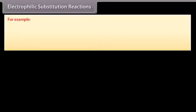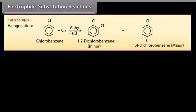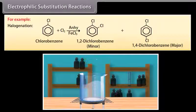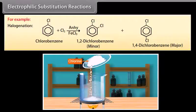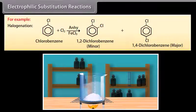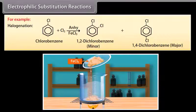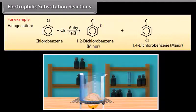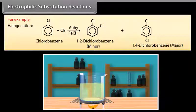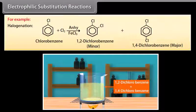Halogenation. When chlorobenzene solution is mixed with chlorine and then we add ferric chloride, it reacts to give 1,2-dichlorobenzene which is a minor product and 1,4-dichlorobenzene which is a major product.